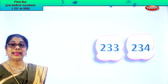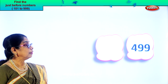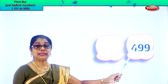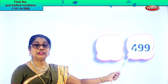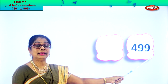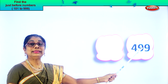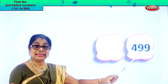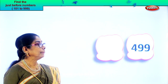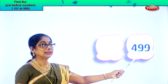Let's go to the next. Here we are. Hundreds, tens, ones place. In the hundredths place you have 4, and 99. How do you read? 499. Now this is hundreds, tens, ones.